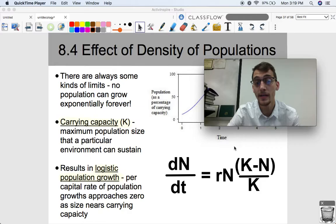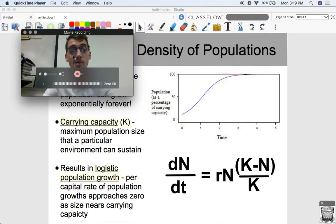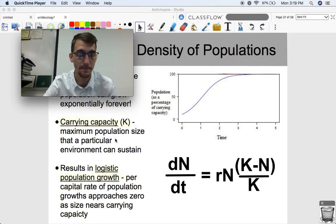Every single area or environment has what we call a carrying capacity. Whether that be a pond for tadpoles or a dew drop for microorganisms, protists. It could be the planet and human beings.